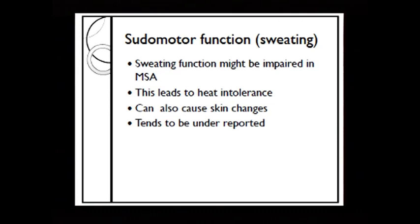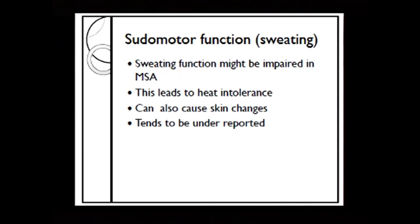I'll briefly mention sweating dysfunction. We very rarely see MSA patients come to the clinic complaining about reduced sweating — most say that doesn't bother them. But sweating function can be impaired in multiple system atrophy, and this leads to heat intolerance, which is the key issue. We sweat to decrease body temperature, so if you don't sweat enough, body temperature rises — and as mentioned earlier, any rise in body temperature worsens orthostatic hypotension.